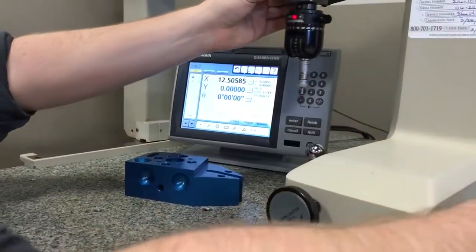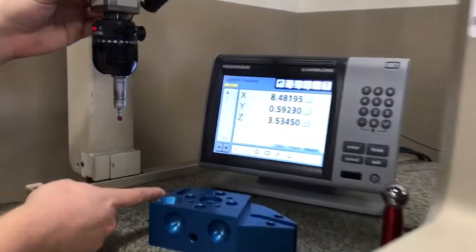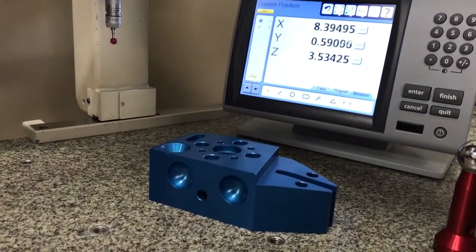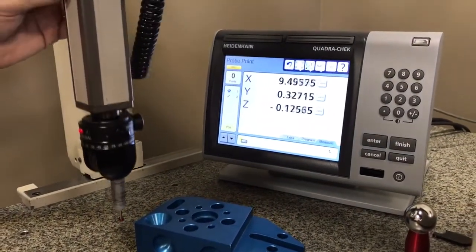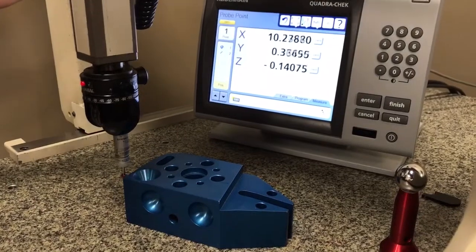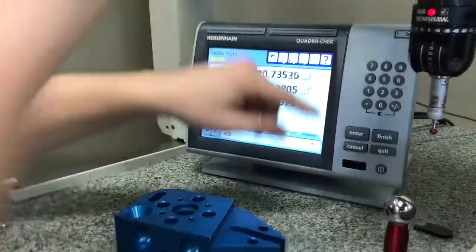Now the next thing I want to do is measure a point right here so I can make my datum as the corner of this part. So I'm going to select point and measure the point. Then press finish.